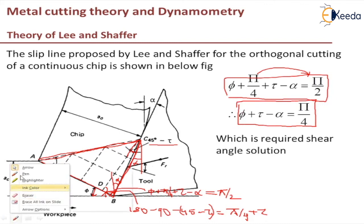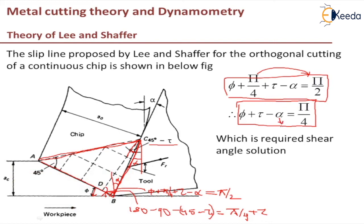However, this equation does not hold good in all cases. If the rake angle α is very small, nearly equal to zero, and the friction angle τ is very high, nearly equal to π/4 (that is 45°), then φ becomes zero — which is not physically possible. This equation therefore fails when rake angle is nearly zero and friction angle is nearly π/4, which corresponds to the case of built-up edge formation.